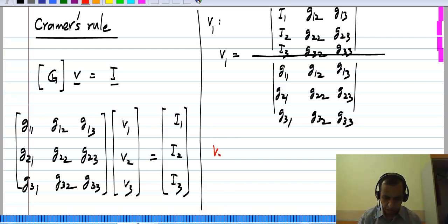Similarly, if you wanted V2 you would have G here, and in this the second column would be I, I1, I2, I3. So similarly for V3 you would take this right hand side vector, put it in the third column, take the ratio of that determinant to the determinant of the G matrix.